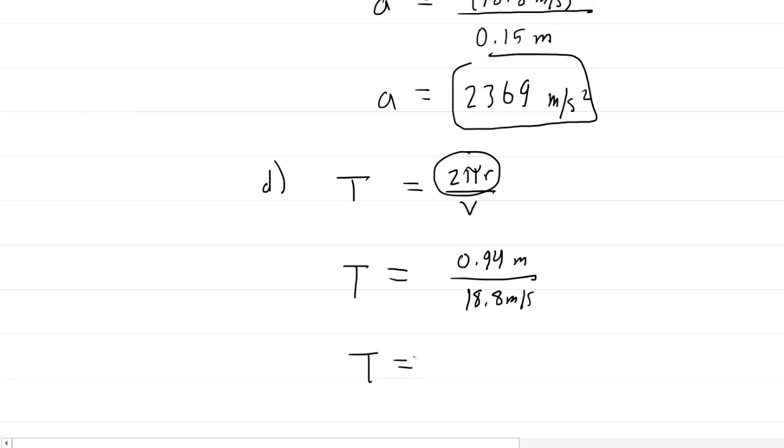So basically, we divide these values. And when we do so, we should get a period of 0.05 seconds. So this would be the correct answer to part D.